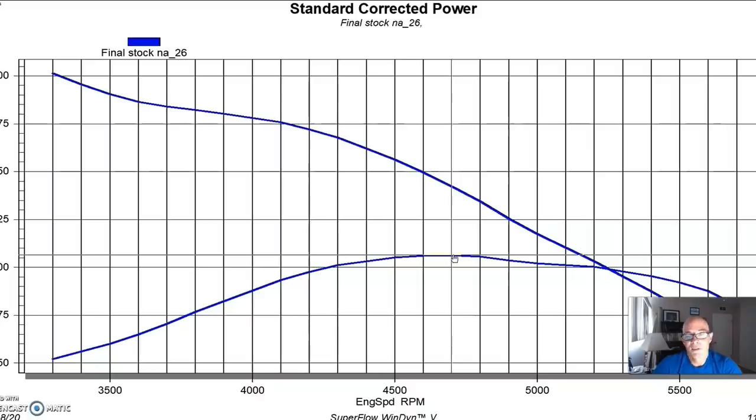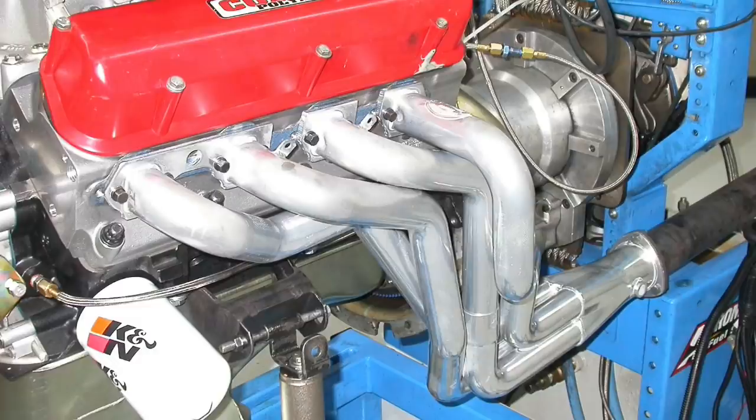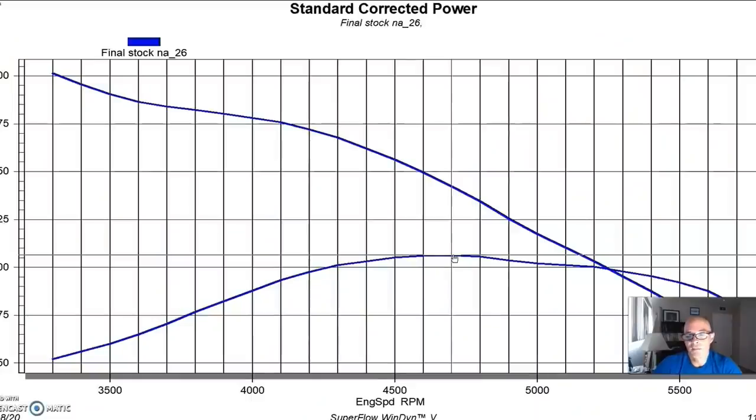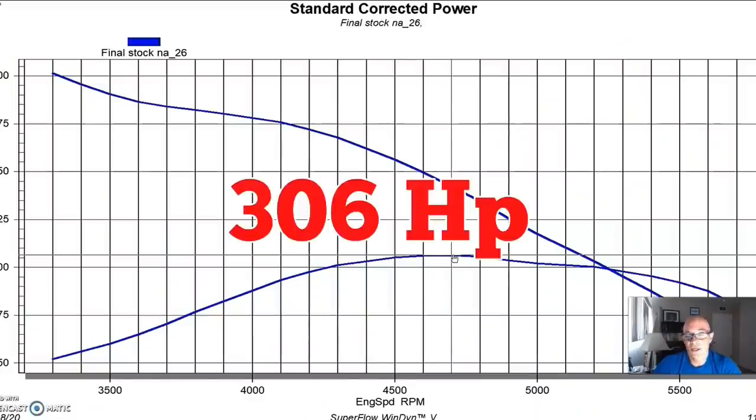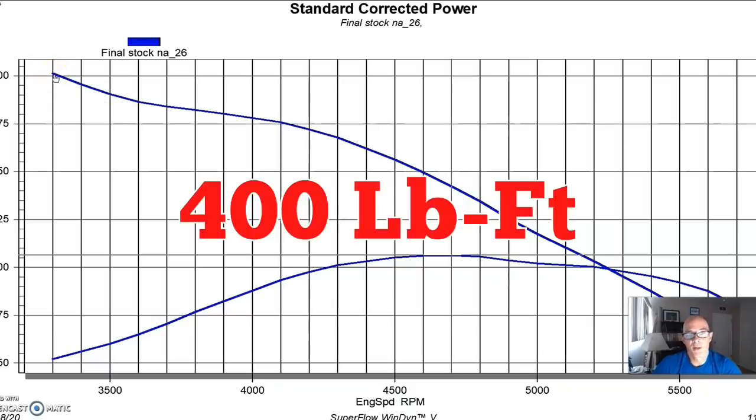So running in that configuration with a FAST XFI management system and a set of long tube inch and three-quarter hooker headers for a Fox chassis, our 347 produced 306 horsepower and about 400 foot-pounds of torque.